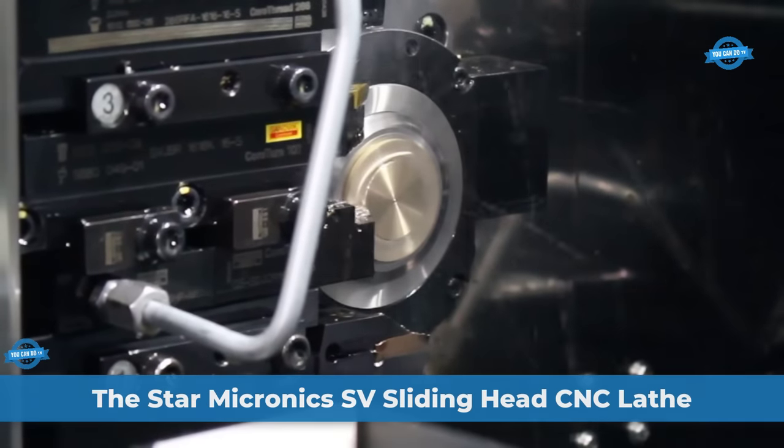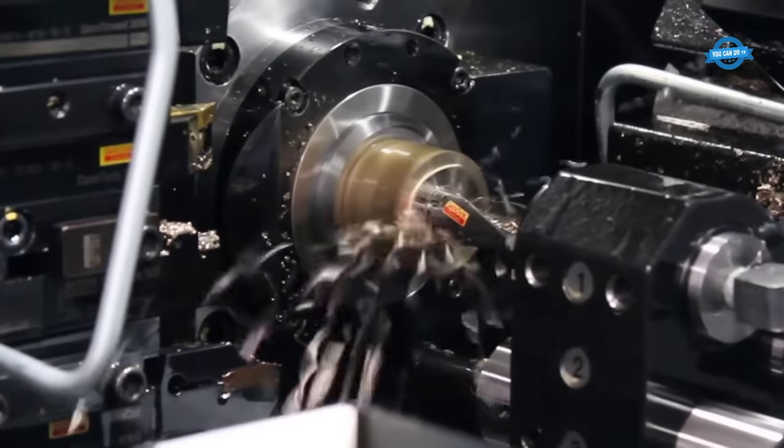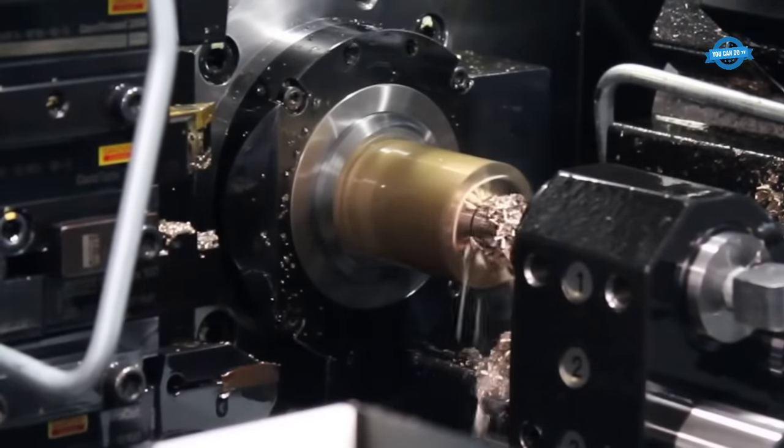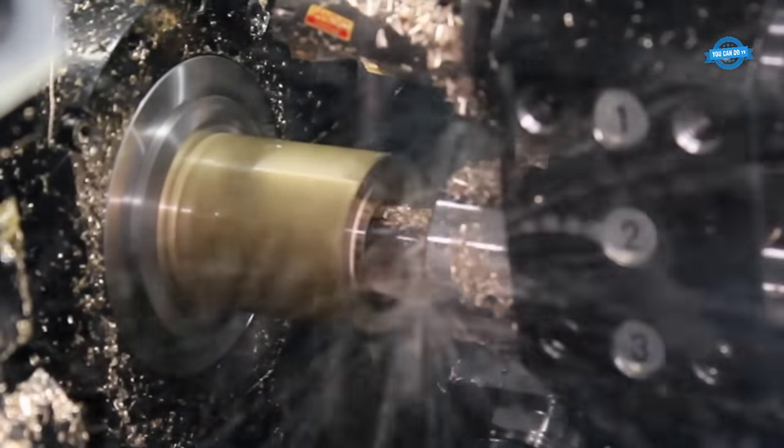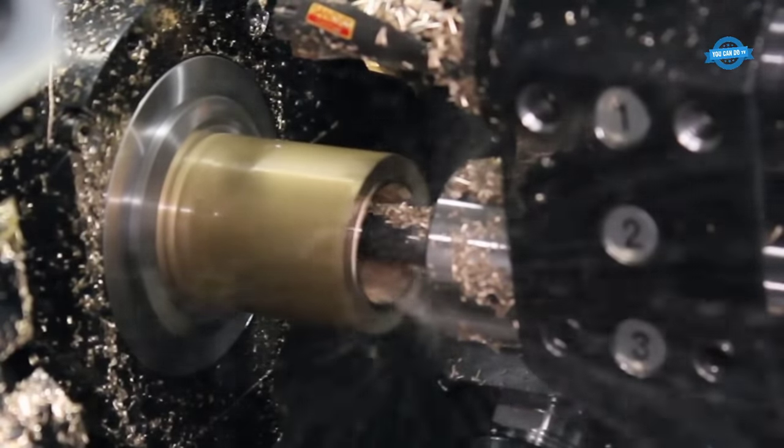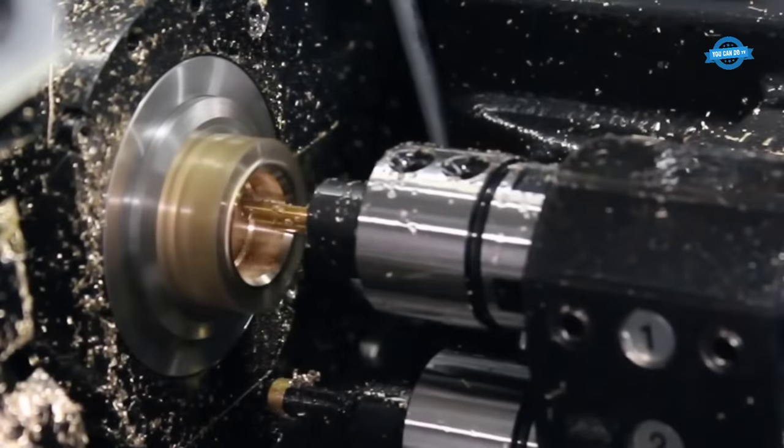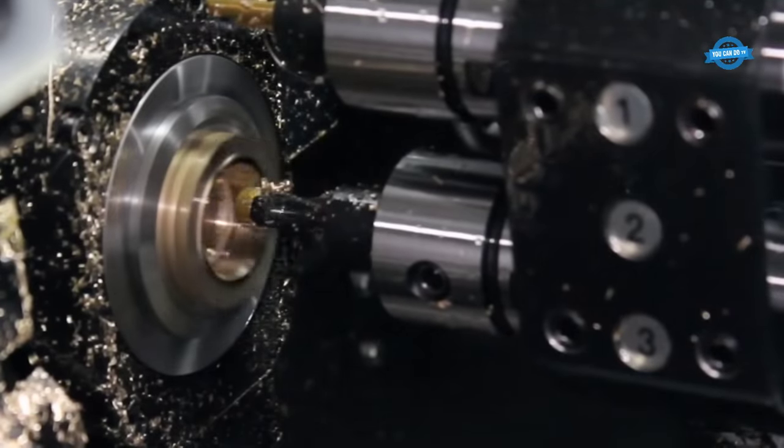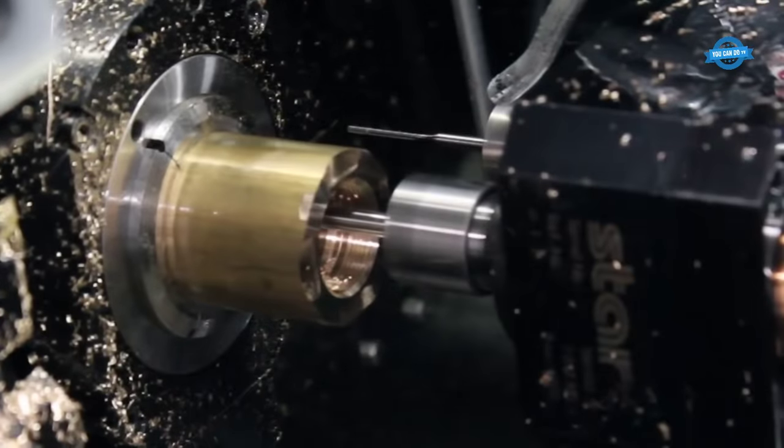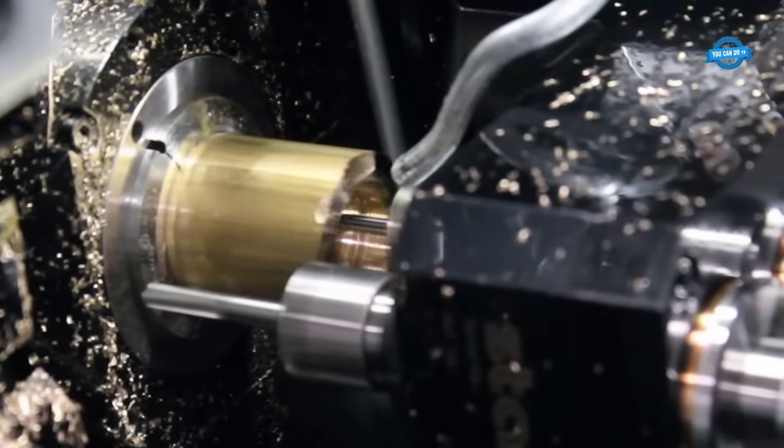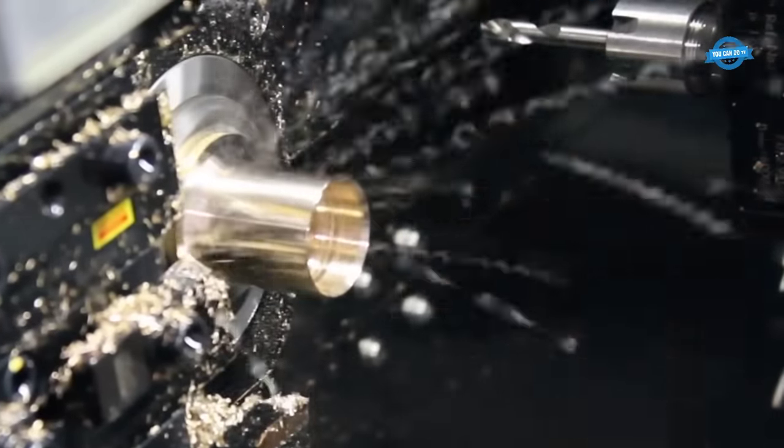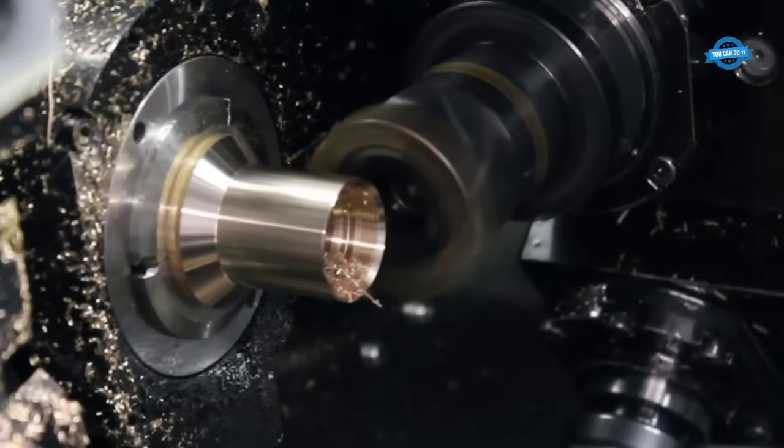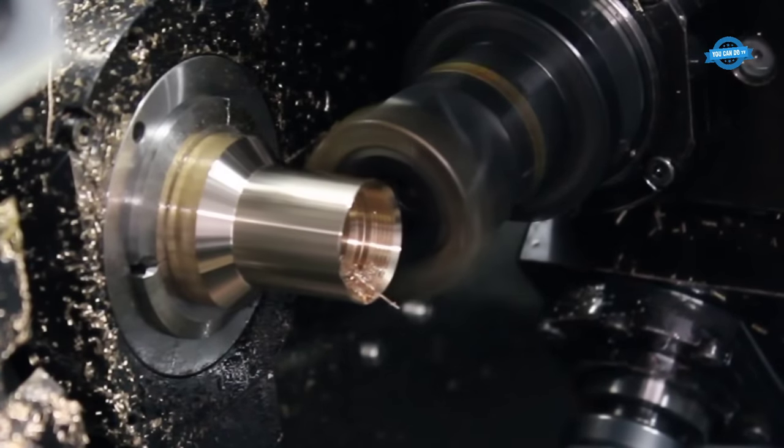The Star Micronix SV sliding head CNC lathe is a cutting-edge machining solution that combines the rapid processing capability of a traditional platen-type sliding head lathe with the versatility of a turret machine. This advanced CNC lathe is designed to deliver high precision and efficiency in the production of complex components, making it a preferred choice for industries that demand superior machining capabilities. One of the key features of the SV sliding head CNC lathe is its main spindle, equipped with a gang-type tool post and an eight-station turret. This configuration allows for simultaneous machining operations, enhancing productivity and reducing cycle times. Additionally, the turret includes an independent Z3 axis, which enables the superposition control mode, by which two different features can be machined simultaneously using both Z1 and Z3 axes. This innovative approach significantly reduces idle time and optimizes the overall machining process.